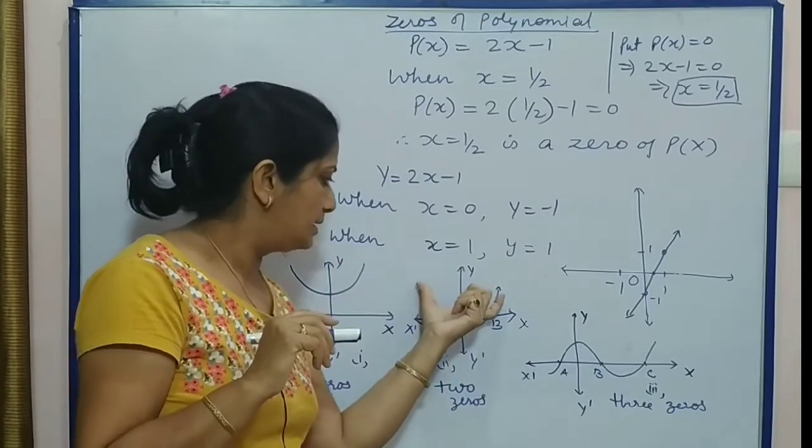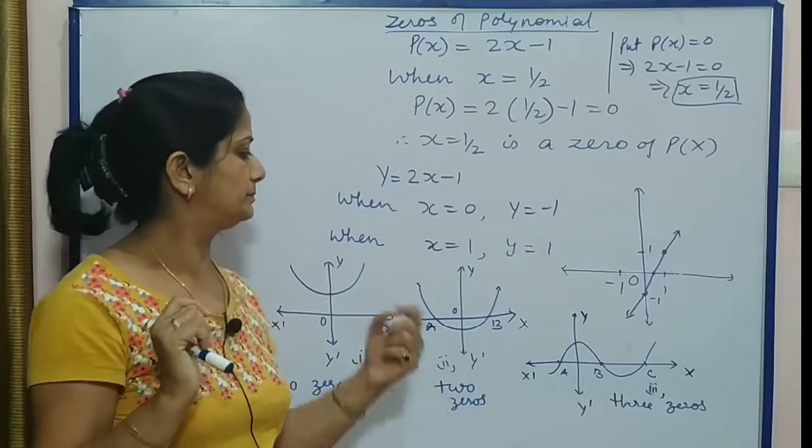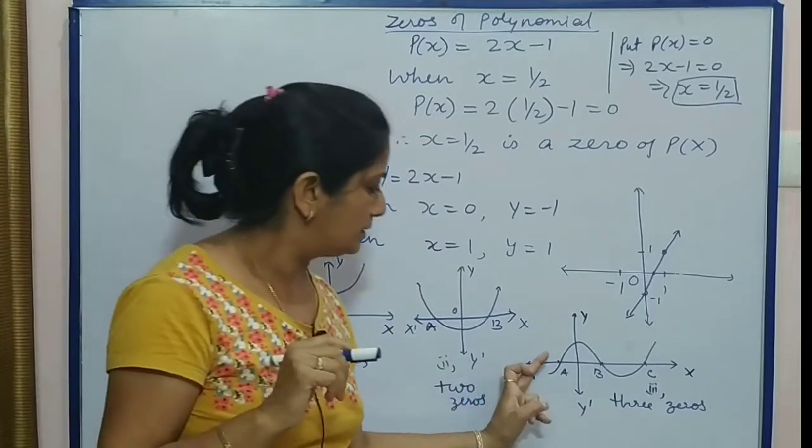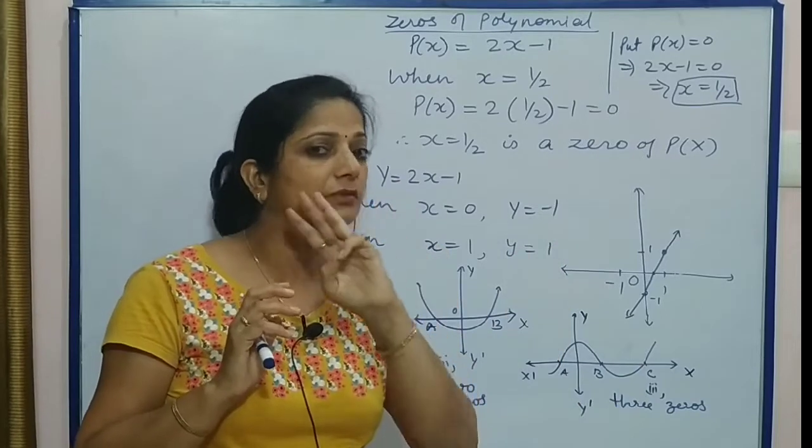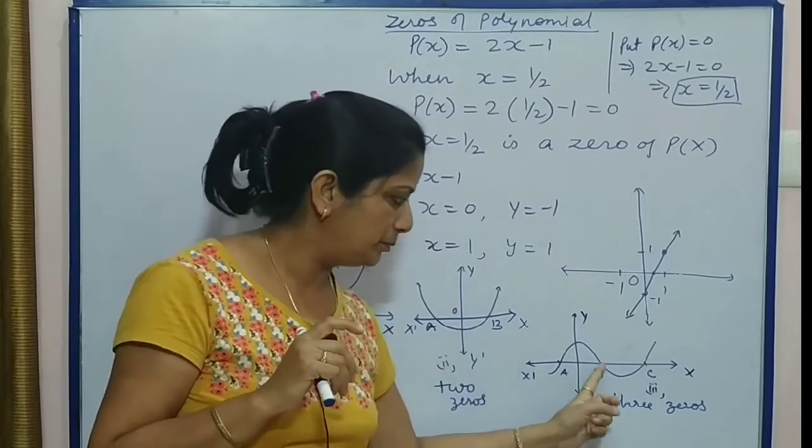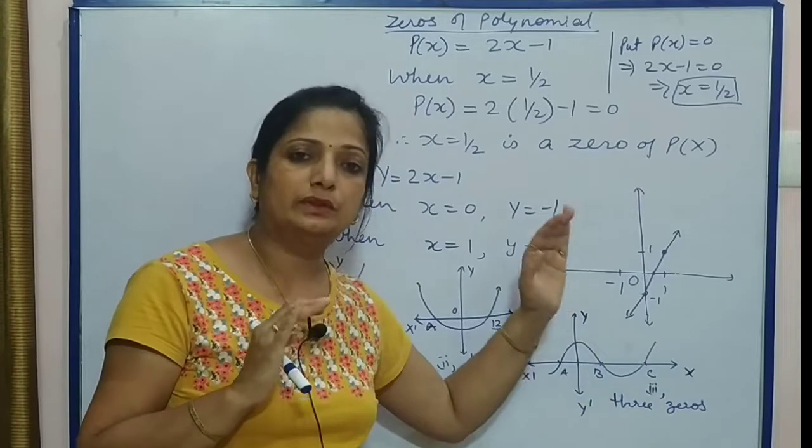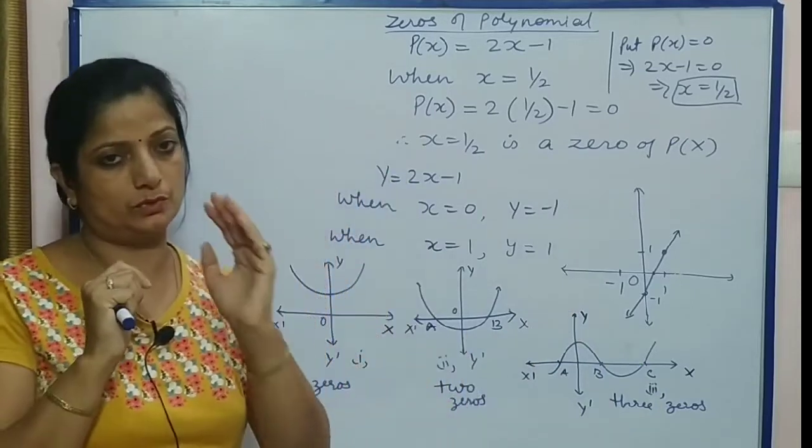This graph cuts x-axis at two different points a and b. That means this polynomial has two zeros. Again, this graph cuts x-axis at different three points a, b, and c. So this polynomial has three zeros.